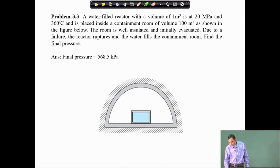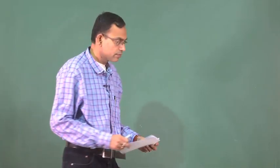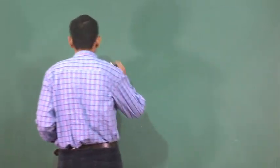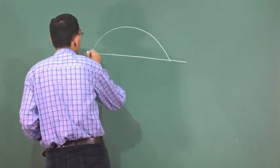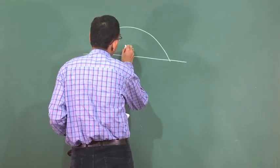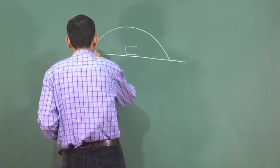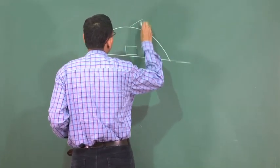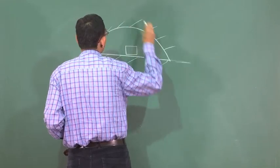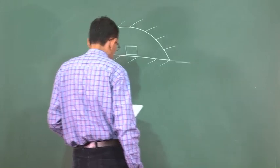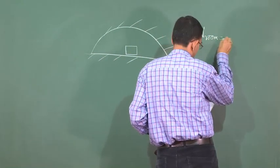As is our customary practice, we will draw a schematic of this. The room is insulated — the hatch marking is given in a heat transfer problem to indicate that it is insulated. It is also given that the room has a volume of 100 meter cube.